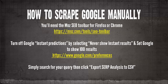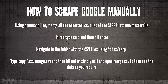In this video we'll go over how to scrape Google manually. You need three things: the MozBar SEO toolbar for Firefox or Chrome, which allows you to export the SERPs; you need to turn off Google Instant predictions; and you need to set Google to show a hundred results. Then you simply search for your query and click 'export SERP analysis to CSV'.